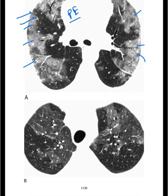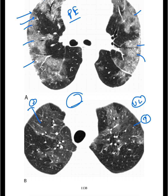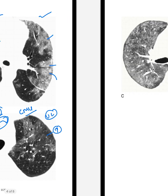In this case, in the upper lobe there is increase in the haziness in bilateral lung fields. The patient presented with acute fever and dyspnea. On further study, bronchoscopy confirmed cytomegalovirus. So this GGO is due to cytomegalovirus.